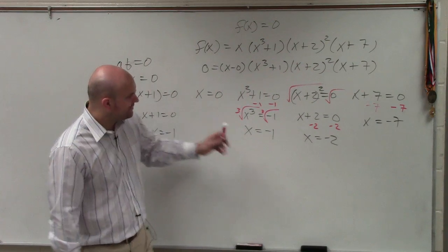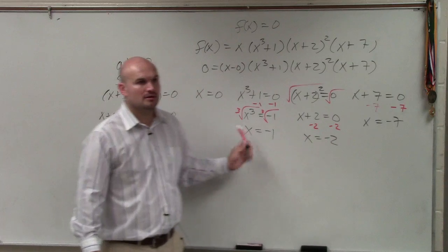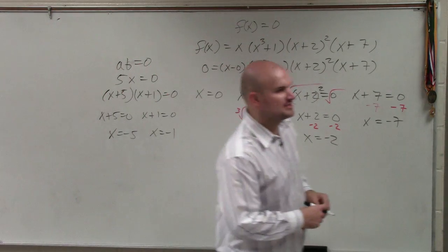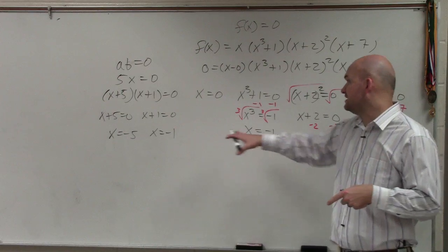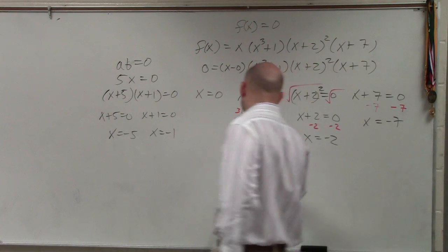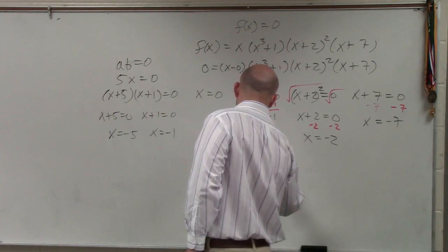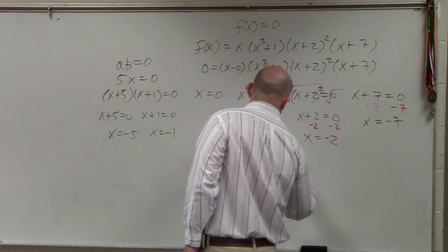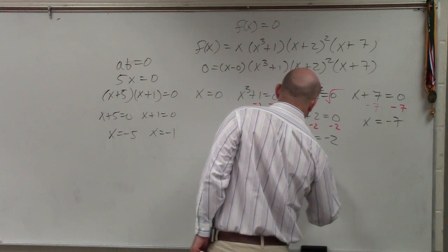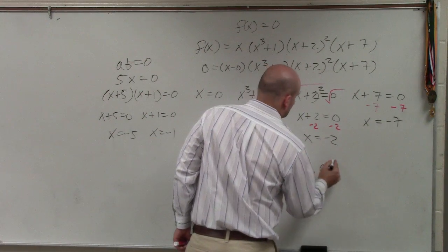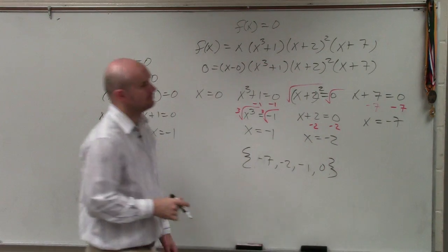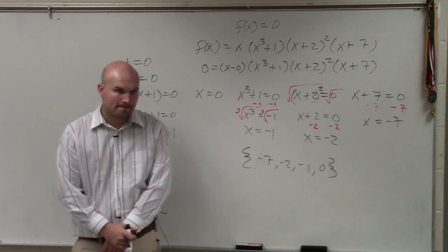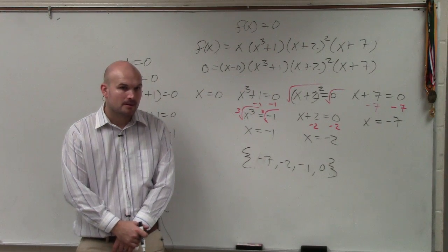These are what we call the zeros of the polynomial. And I apologize. Well, you guys didn't have this, so you guys didn't need to worry about it. But these are what we call the zeros. A lot of times, the zeros, we write as a set of zeros. OK? Yes? Is that it? Or is it not? No.